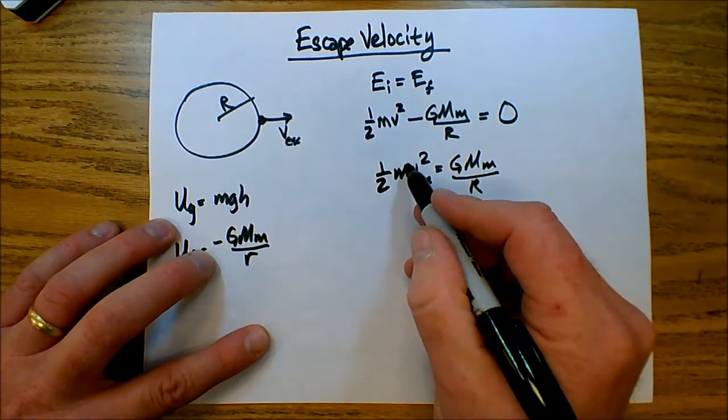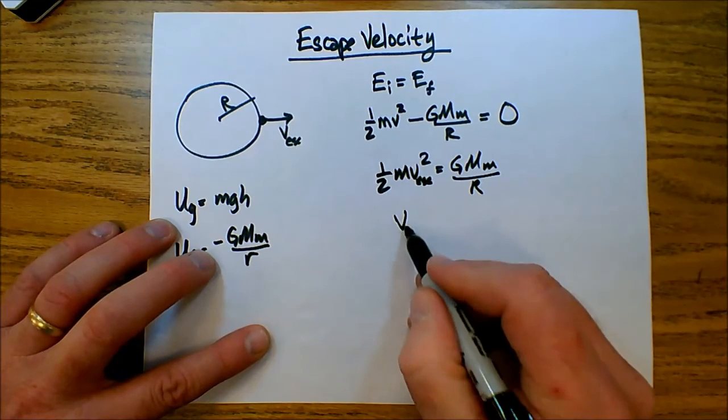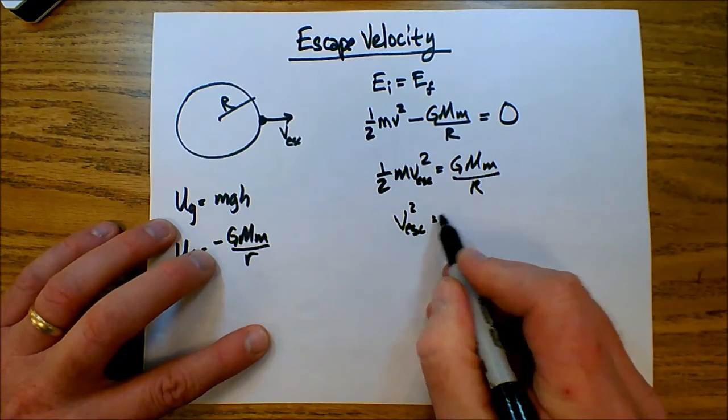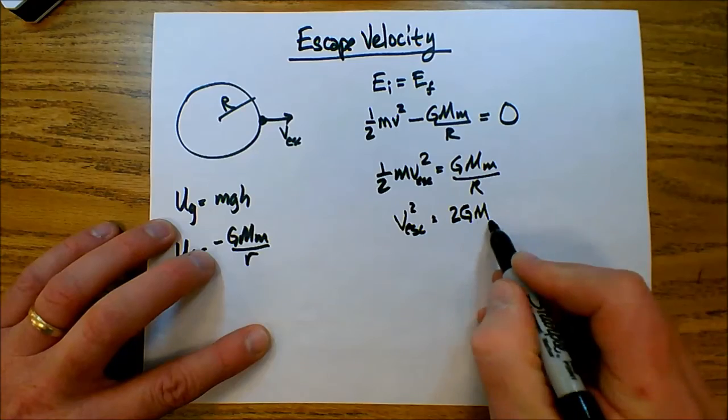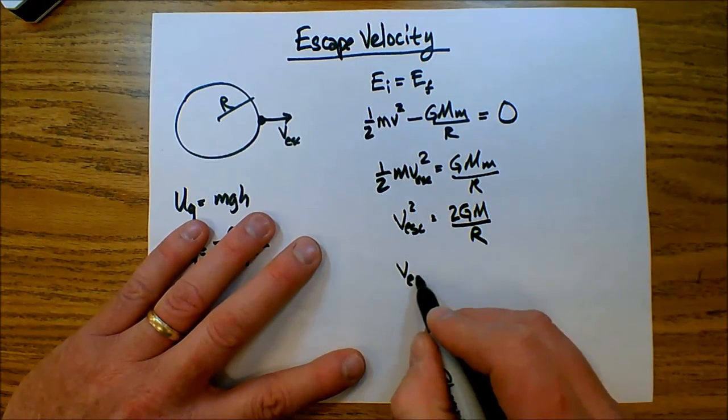And so, notice that the mass will divide out, mass of the object. And this 2 will come up on top. So I have escape velocity squared equals 2G mass of the planet over radius of the planet. I simply square root this to get the escape velocity. This is an expression for the escape velocity.